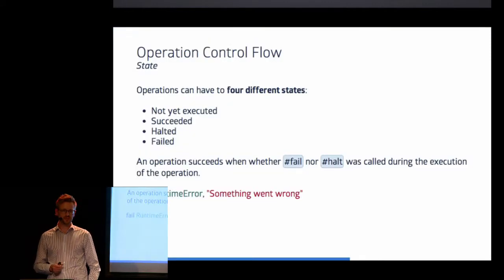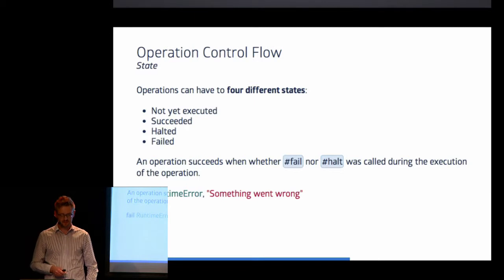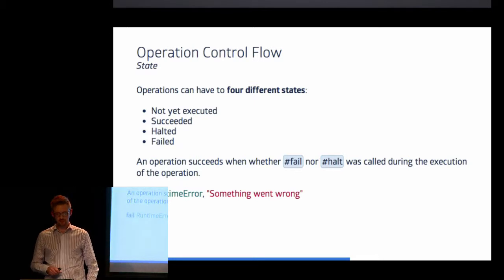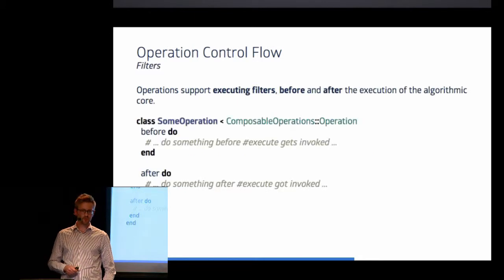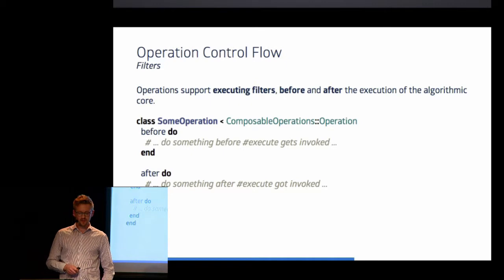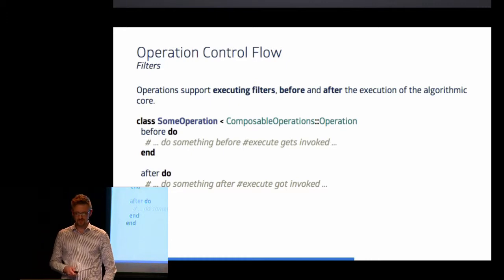An operation can have four states. It can either not be executed yet, it can have been successfully executed, or it can be in two failure states, halted and failed. And in order to transition to the state, you have to explicitly use the fail or halt method in your operation. And fail takes the same arguments as raise does. As for control flow, operations provide the execution of filters before and after the execution of the algorithmic core. In both types of filters, you can fail or hold an operation should you decide that the operation has in fact not successfully been executed.